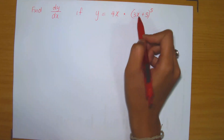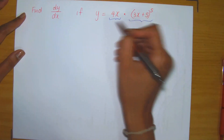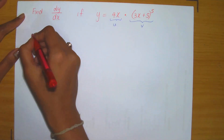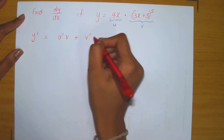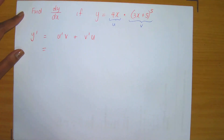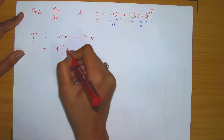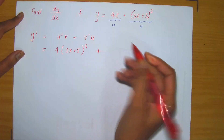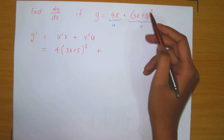Another example: y equals 4x times (3x + 5) raised to the power 5. Observe immediately that we have the product of two functions, so we will be using the product rule. Take u = 4x and v = (3x + 5)⁵. Then y prime equals u prime times v added to v prime times u. Let's compute the derivatives: the derivative of 4x is 4, multiplied by v, which is (3x + 5)⁵. Then we add v prime times u — and note that computing v prime requires the chain rule.